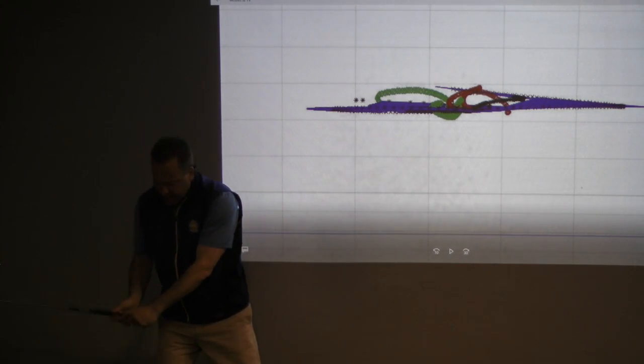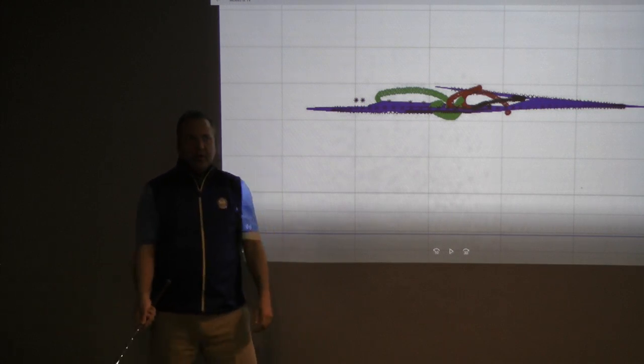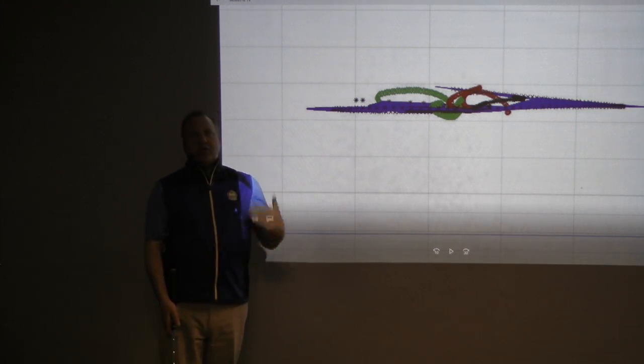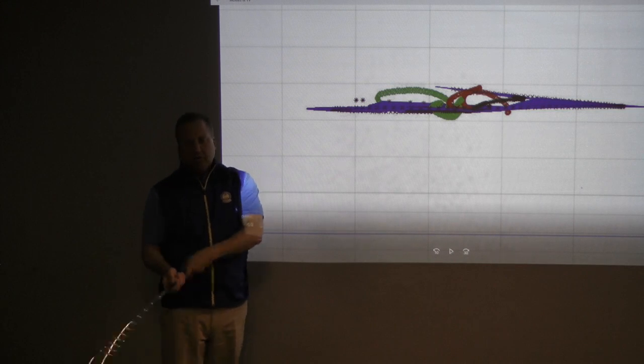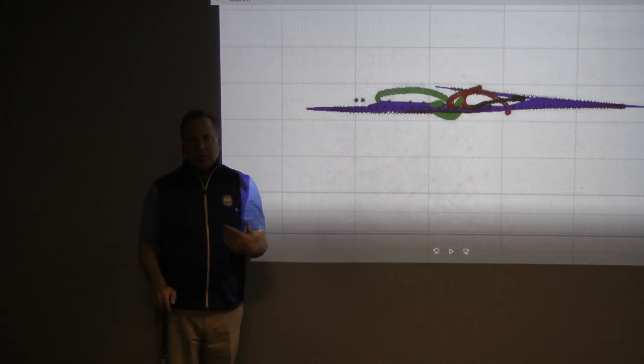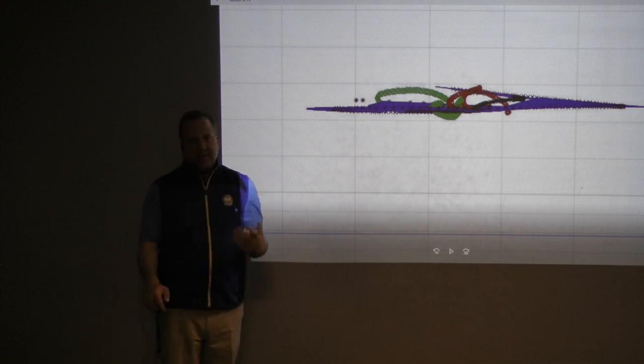So what's happening in the downswing is we want the club head to move out, but when that happens, your hands are going to slow down. And I'm going to suggest to you that your body and hands slowing down a bit when the club moves out is something that you should welcome. It's going to suck the energy out of you and add it to the club head. And I think amateurs are trying to avoid that from happening.